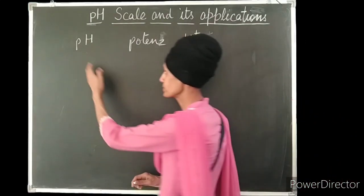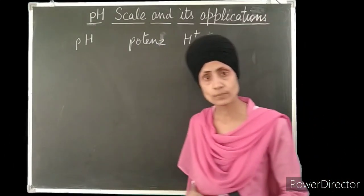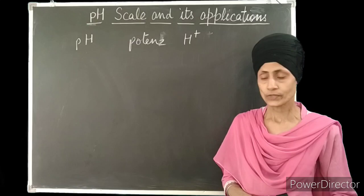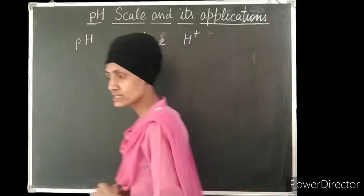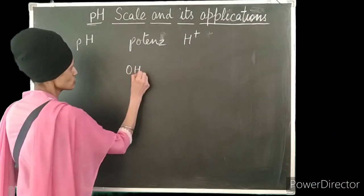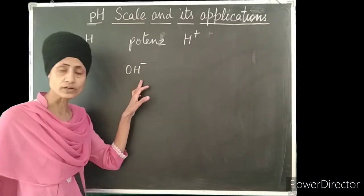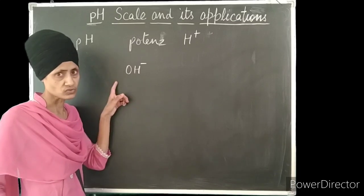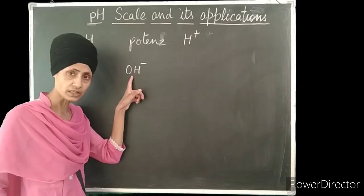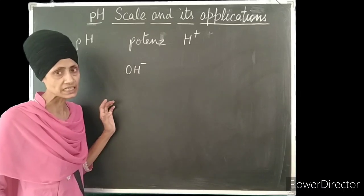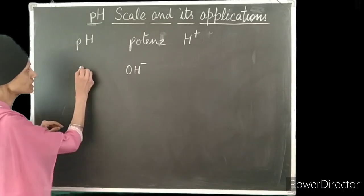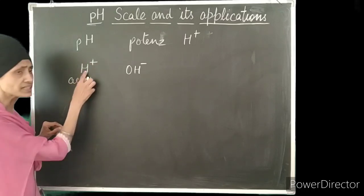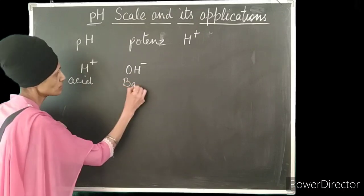So we can say that pH scale tells us about the strength of acids and also the strength of the bases. Now we know that bases contain OH- ions. More the OH- ions, stronger is the base. Less OH- ions in a solution, less is the basic strength. Strong bases contain more OH- ions and weak bases contain less OH- ions. Similarly, strong acids have more H+ ions and weak acids have less H+ ions.